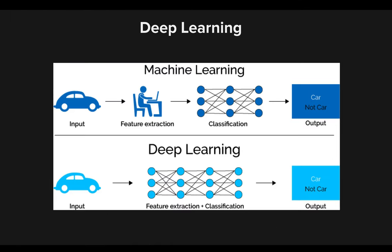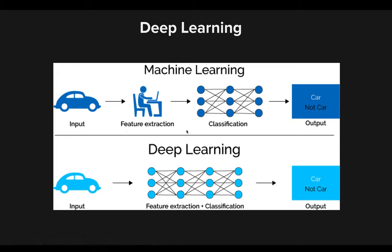Now for deep learning. We know how supervised learning works — we get an input, maybe a feature of a car, and we want to extract features from it. Feature extraction is a very common concept in machine learning and deep learning. Feature extraction is simply extracting features from inputs. In the case of a picture of a car where we want to predict whether it's a car or not a car, feature extraction means taking out features from that input.